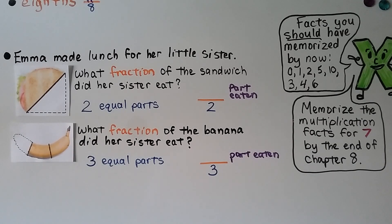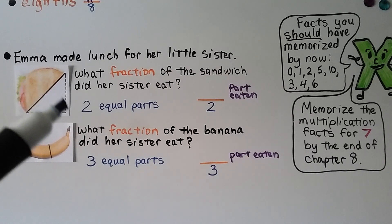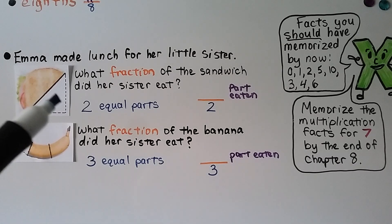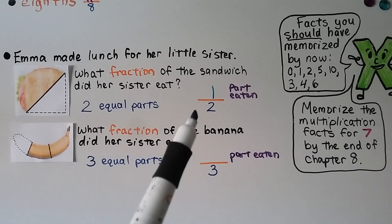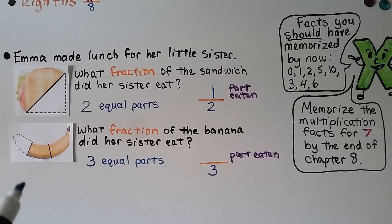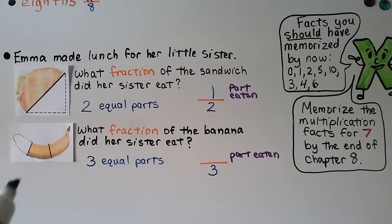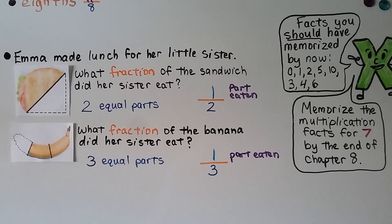Emma made lunch for her little sister. She made her a sandwich and gave her a banana. What fraction of the sandwich did her sister eat? There were two equal parts, and one of the equal parts is missing — that's the part she ate. She ate one of the two parts, so she ate half. What fraction of the banana did her sister eat? There were three equal parts, and the missing space is the part she ate. She ate one of the three equal parts — her sister ate one-third of the banana.